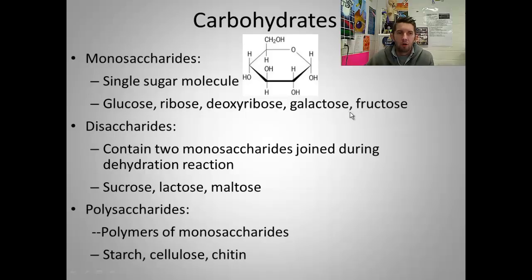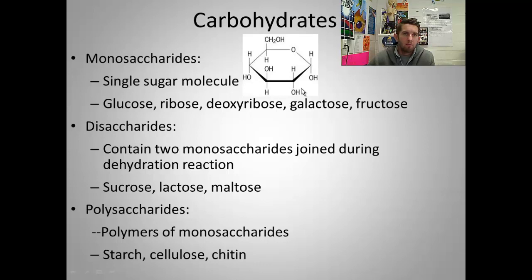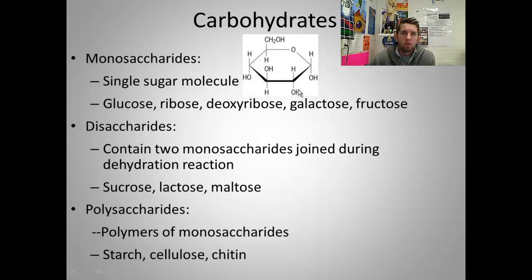In our organic chemistry unit, we're going to work our way through the organic molecules, starting with carbohydrates. We're going to talk about lipids, proteins, nucleic acids, but here for carbohydrates, I've got a picture just to start talking about them — the most general, most well-known carb: glucose. They're all kinds of sugars, simple sugars — monosaccharides at least. If you have your organic compound chart in front of you, you can use it to follow along.